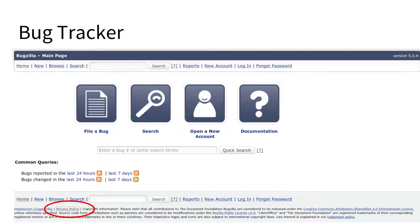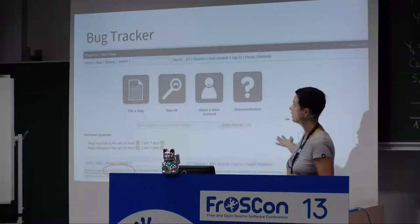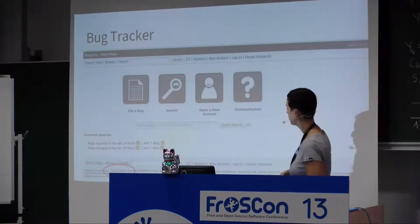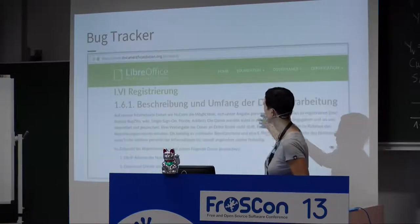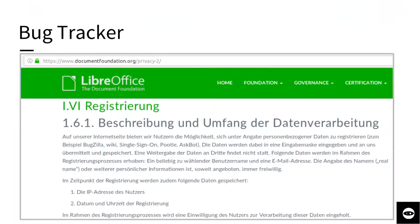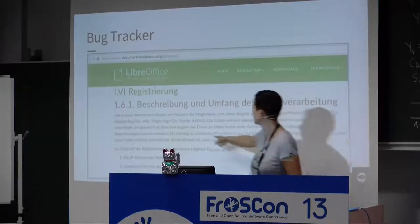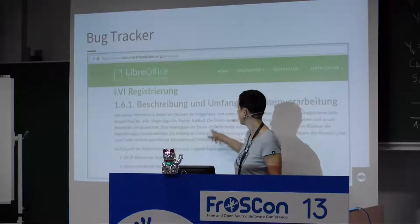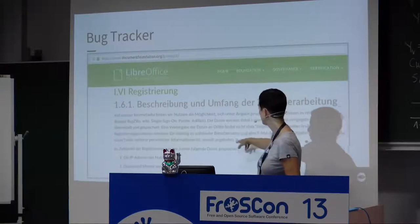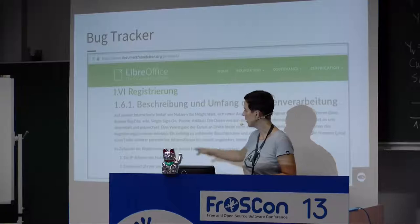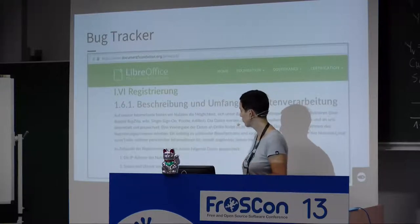Another example: most open source communities run a public bug tracker, also a tool collecting personal data. This is the bug tracker of the OpenOffice project and they provide a privacy policy here. Their policy states that personal data is collected during registration, there is no transfer to third parties, that only the email address is required and the rest is voluntary, and explains what other data is collected, what it is used for, and when it is deleted.